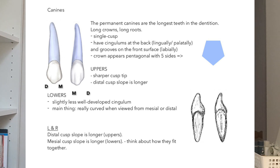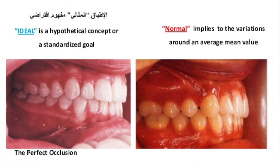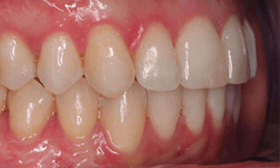Determining left and right for canines: the distal cusp slope is longer for the uppers, whereas in the lowers, the mesial cusp slope is longer — so if you look at a picture of how they fit together it should make sense. Also, the cusp tip is slightly sharper on the uppers, whereas it's a little bit more worn and not as distinctive on the lowers. And that's canines done.